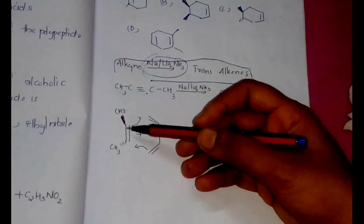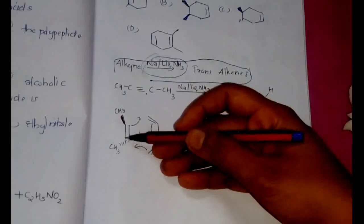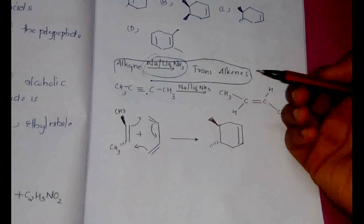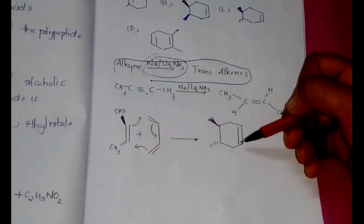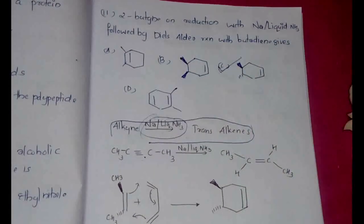Then from that it will be forming, so one will be above and one will be below when we are writing it like this. One will be above the plane and one will be below the plane since it is trans. After that the Diels-Alder reaction with butadiene will be formed and this would be our product. So according to our option, option C would be the right answer. So the point you have to remember here is: alkyne with Na and liquid NH3 will give trans alkenes.